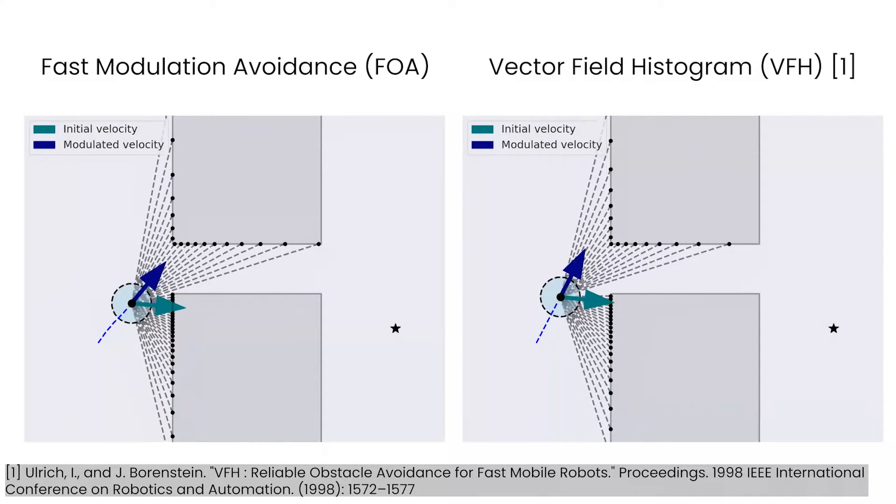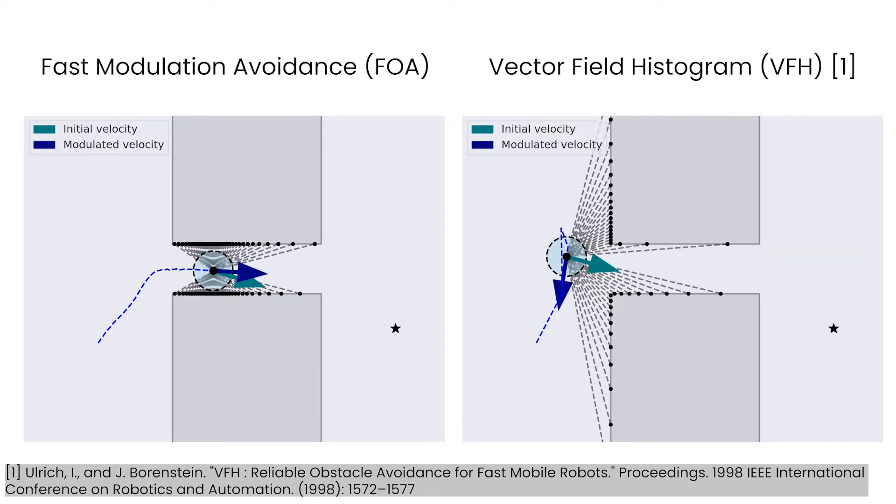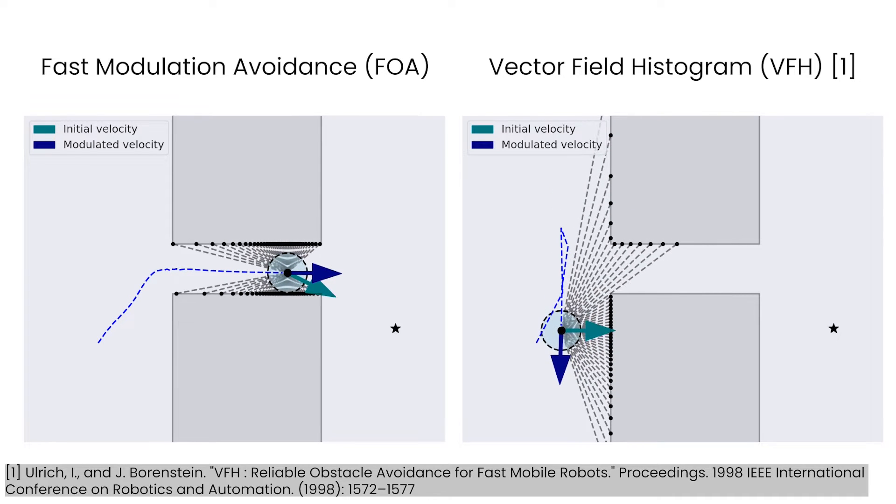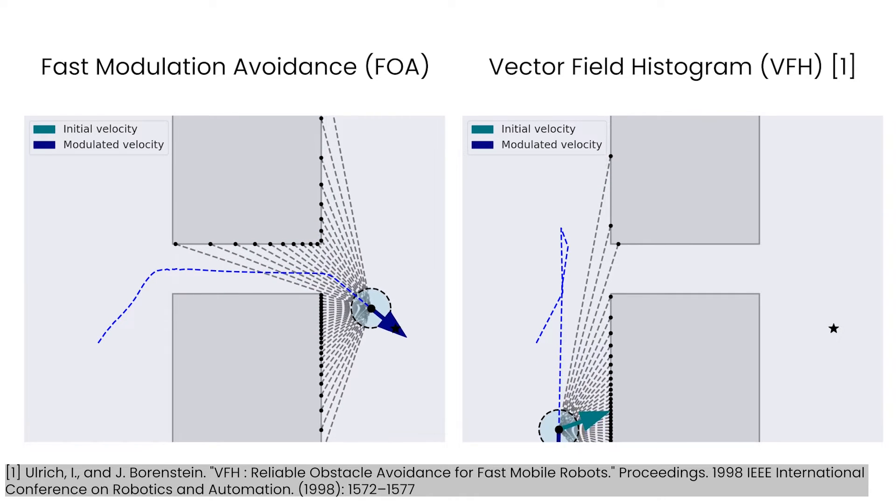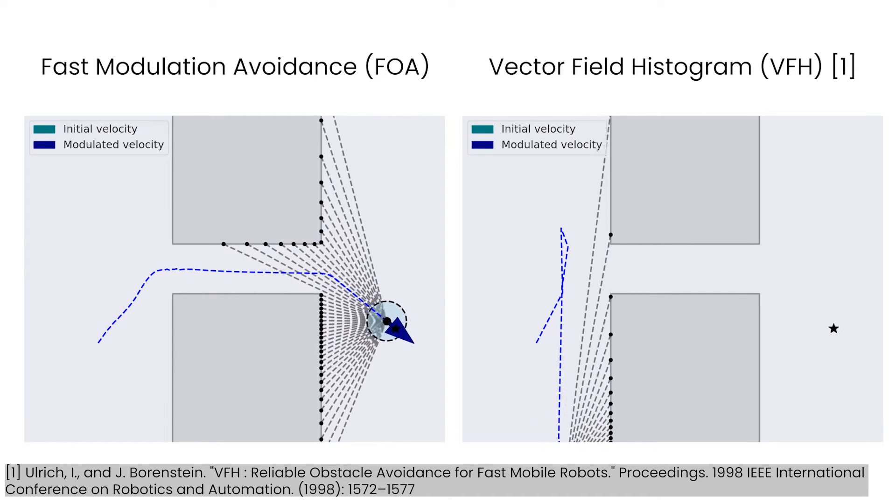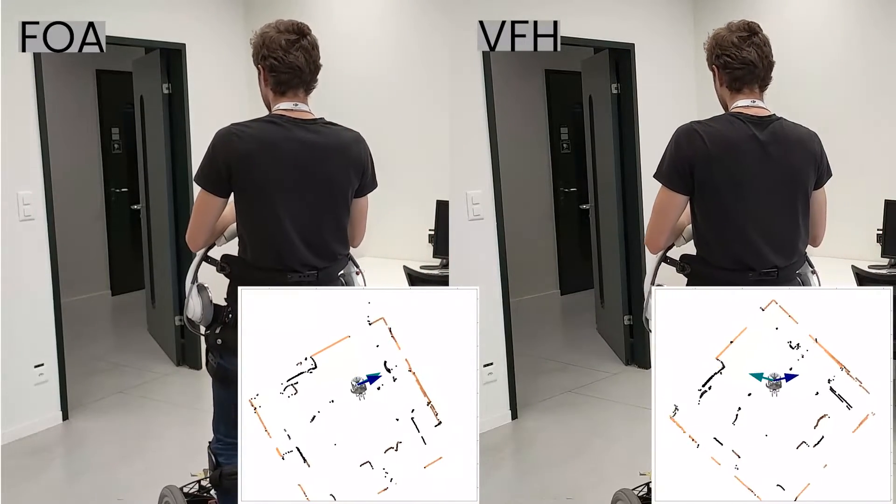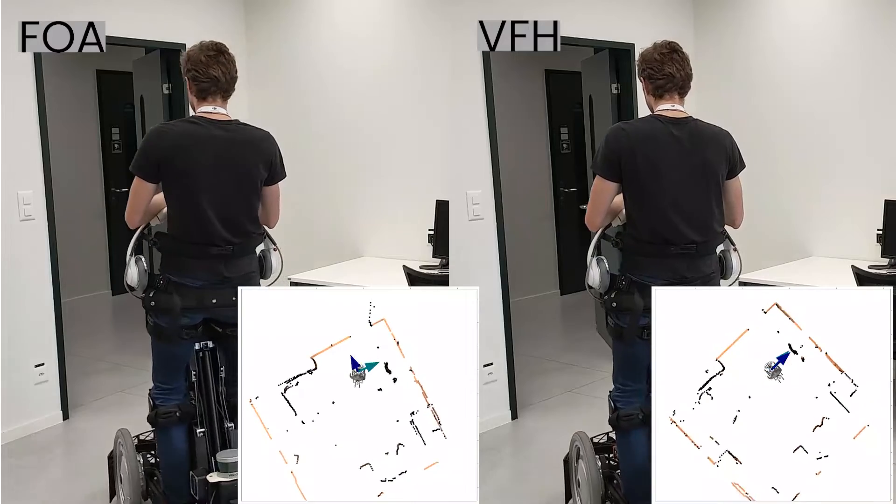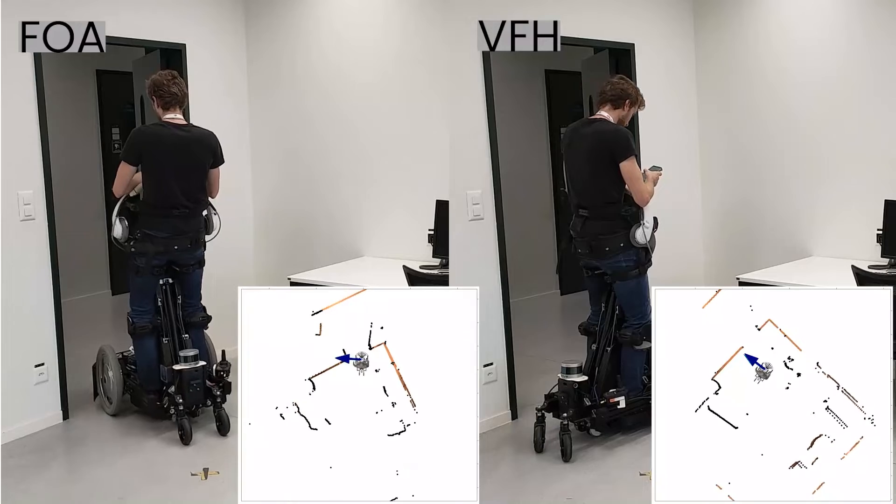The presented fast obstacle avoidance algorithm can smoothly transition from open space to narrow passages, whereas comparable algorithms such as the velocity field histograms often get stuck in narrow doorways. This prohibited the operator to exit the room during the experiment.